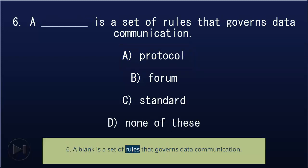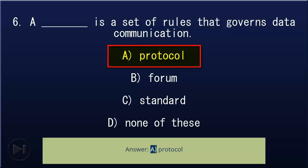6. A blank is a set of rules that governs data communication: A) protocol, B) forum, C) standard, D) none of these. Answer: A, protocol.